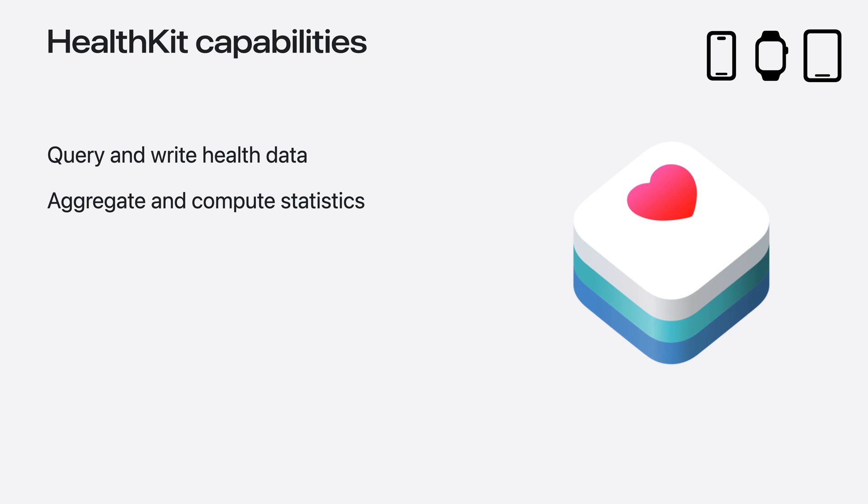As you might know, HealthKit provides a centralized and encrypted repository for the user's health data. With permission, you can access this data to create experiences that help people get healthy and stay healthy. HealthKit capabilities include the ability to query and write health data, as well as aggregate and compute statistics of data over time. You can also register your app to receive updates in the foreground or background when data changes. Data can be stored in HealthKit across a broad spectrum of health domains, including activity, heart, and sleep, as well as clinical health records such as immunizations and procedures.